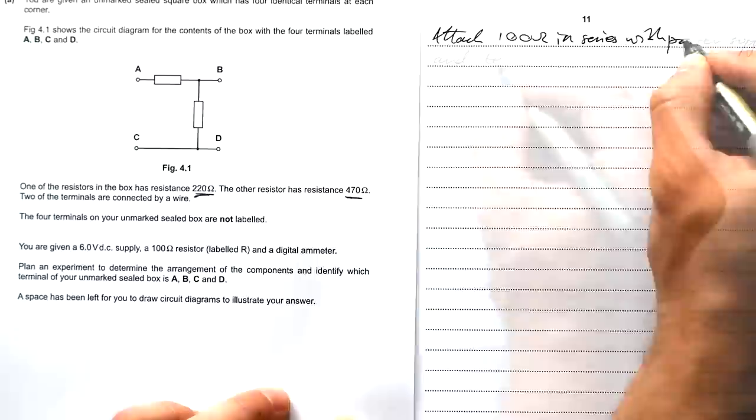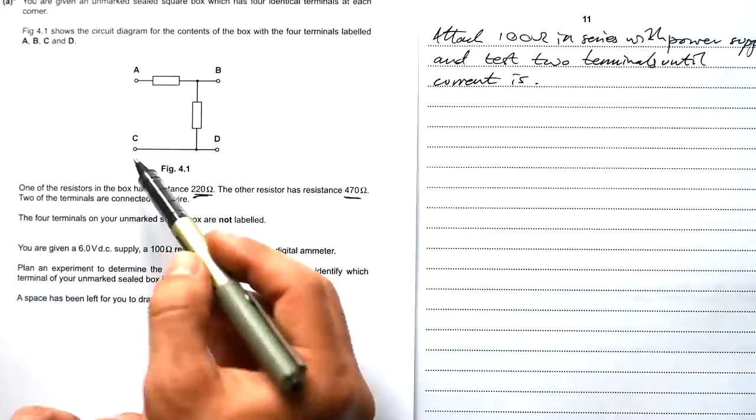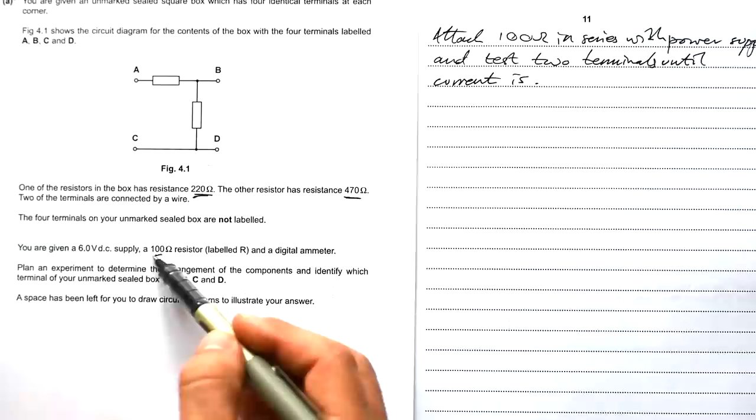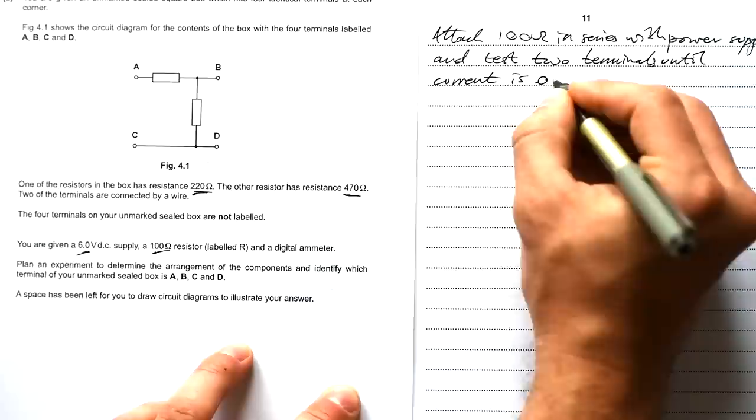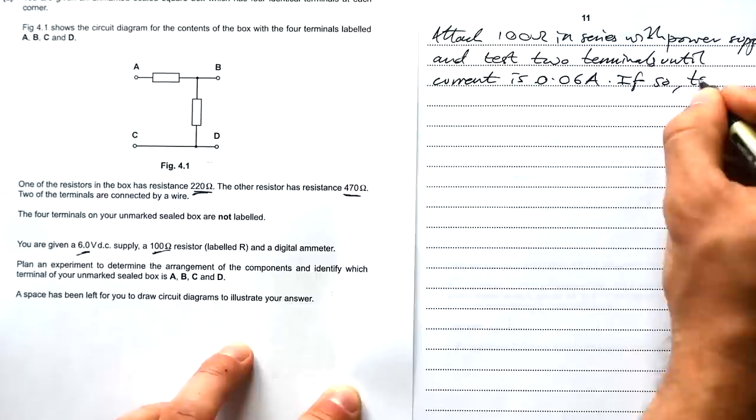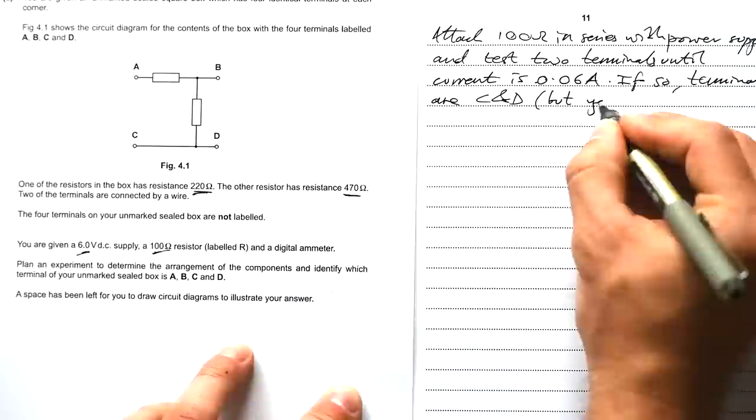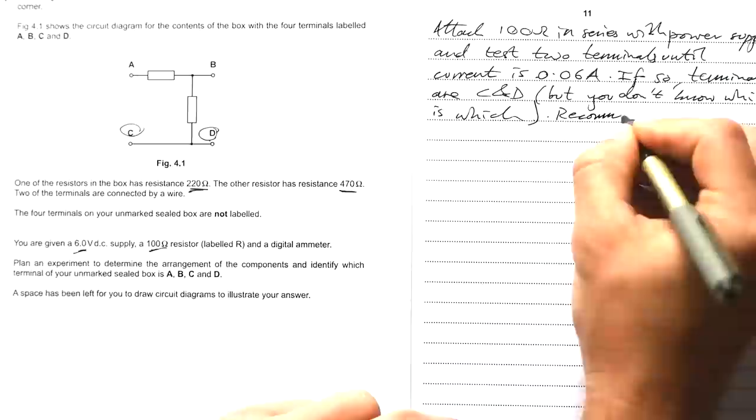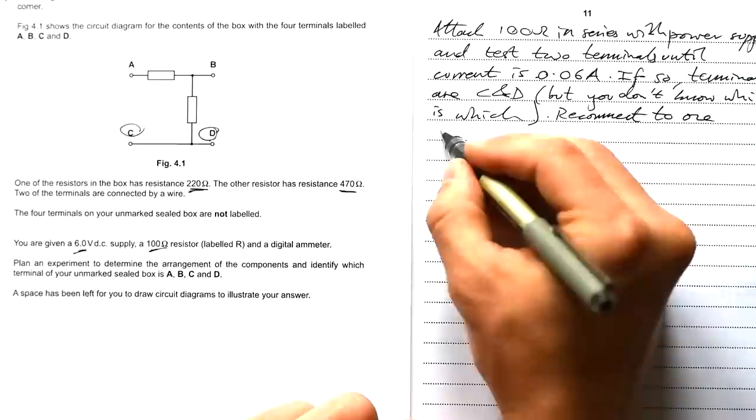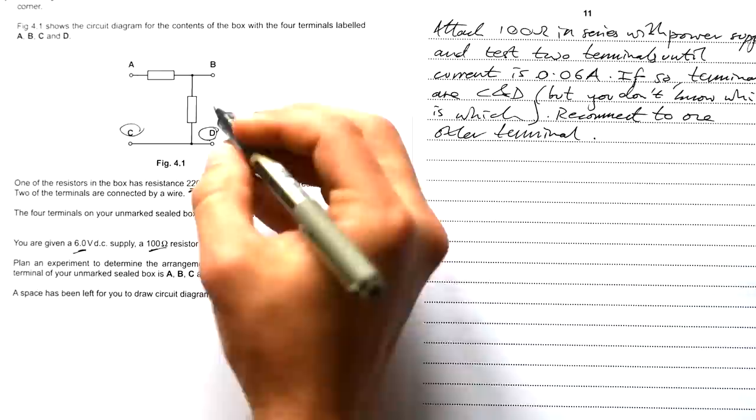Attach 100 ohm resistor in series with power supply and test two terminals until current is... Now we're trying to find C and D. So if there's no resistance between C and D, then we're looking for 100 ohms and 6 volts. So we're looking for a current of 6 over 100, so it's going to be 0.06 amps. If so, terminals are C and D, but you don't know which way around. So we found either C or D. Next thing we want to do is change the other terminal to A or B.